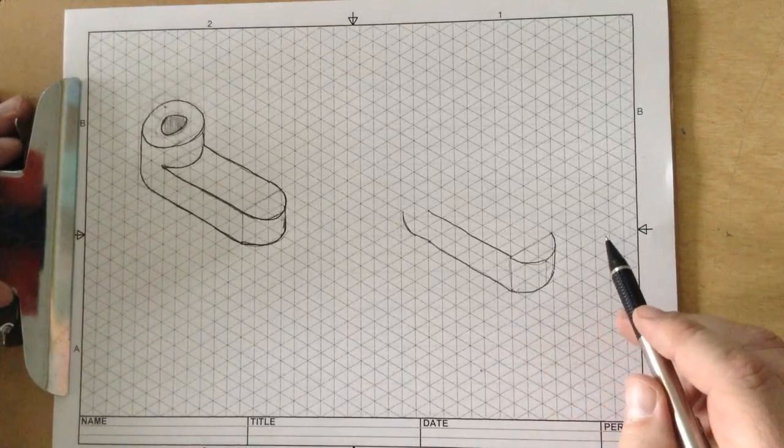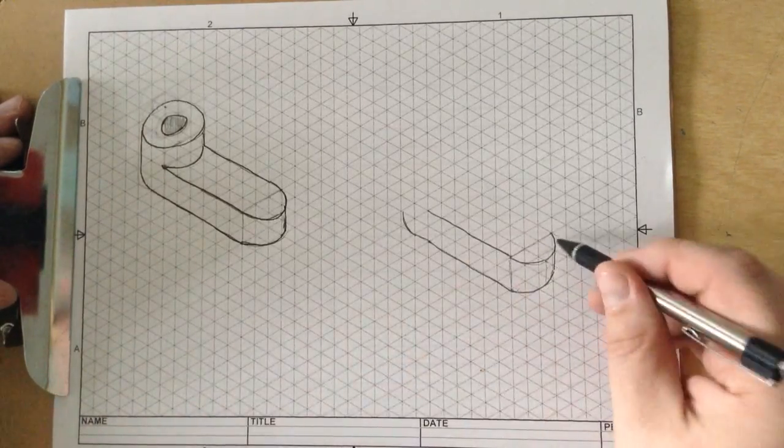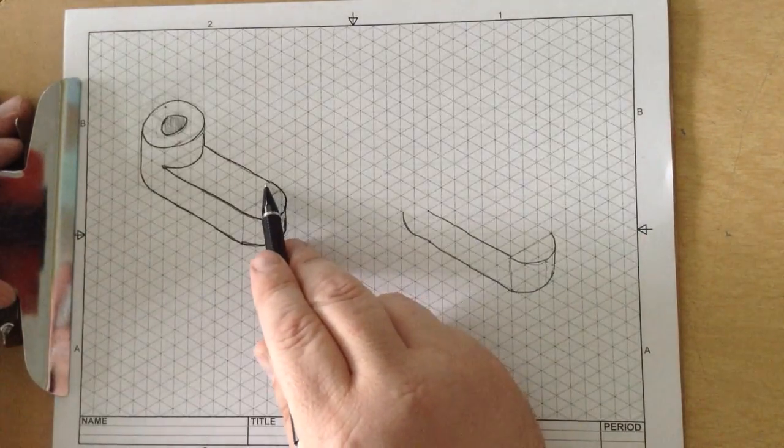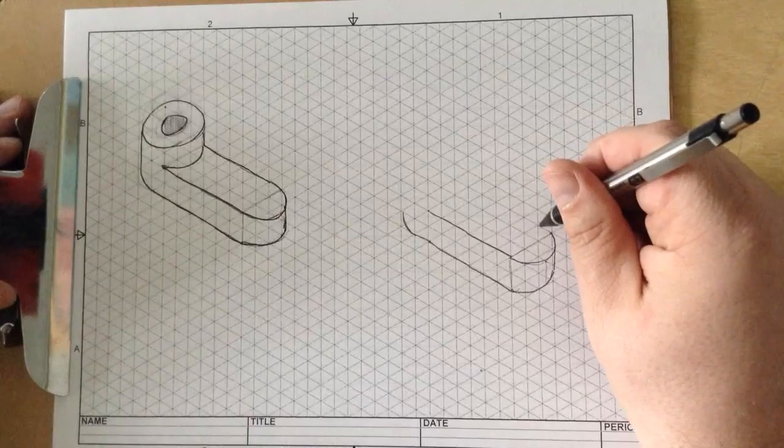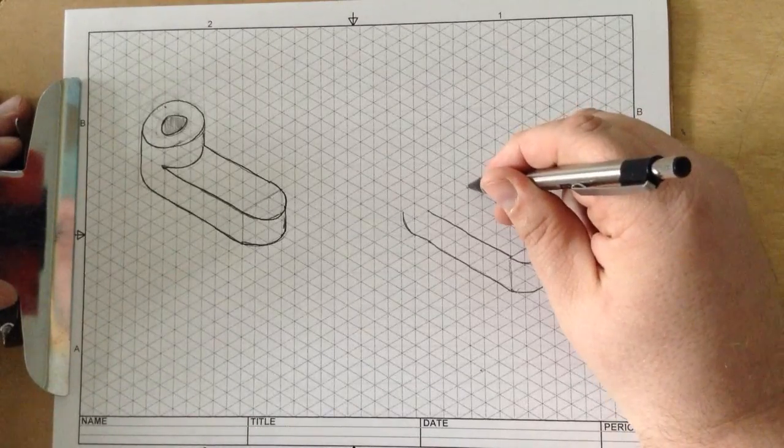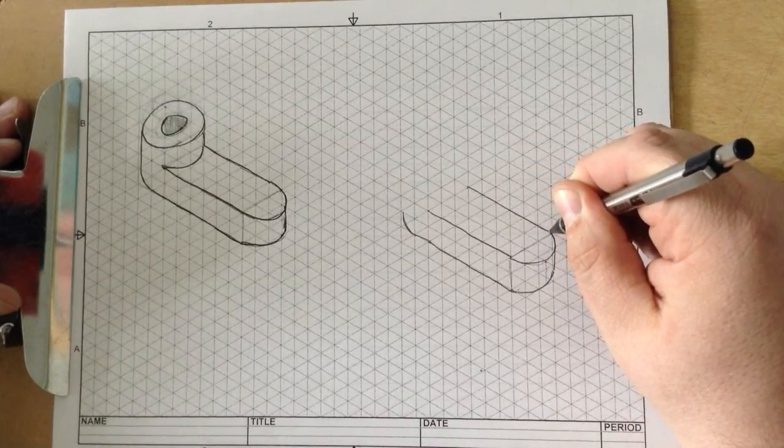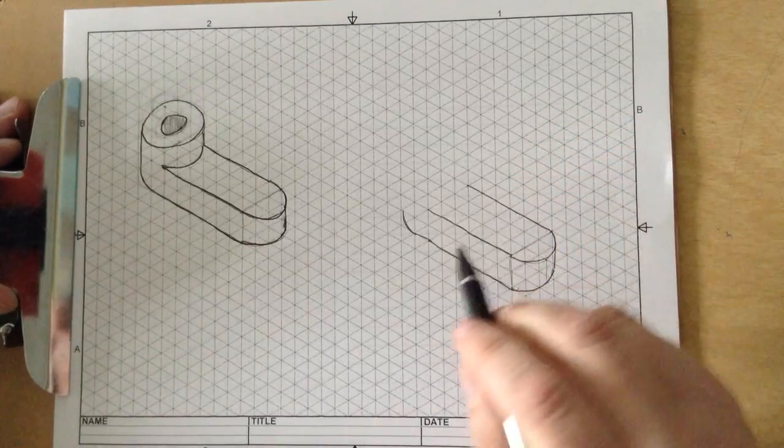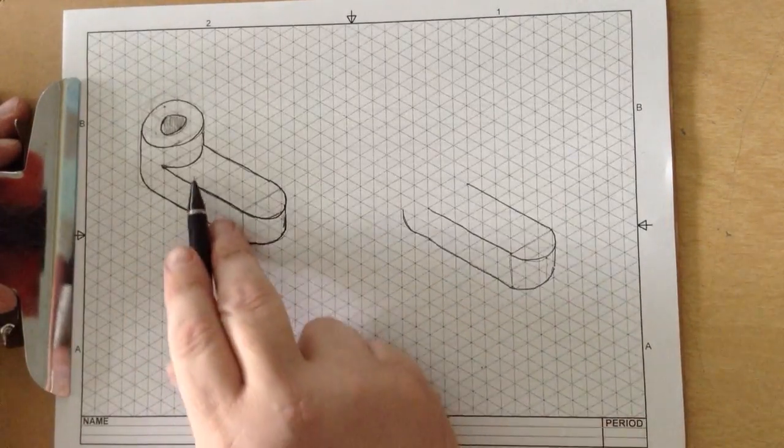We can erase the construction lines when we're all said and done with everything. Now back here, from this point, we go 1, 2, 3, 4, 5, 6, then 1, 2, 3, 4, 5, 6 right there. And connect the lines like so. Now we have pretty much this shape done.